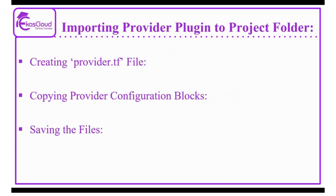The third topic is how to import the provider plugin into your Terraform project directory. This consists of three steps. First, how to create the provider.tf file. To use the AWS provider in your Terraform project, you will need to define its configuration. This is typically done in a file named provider.tf. Terraform configuration files use the HashiCorp Configuration Language, HCL, and they typically have a .tf extension.